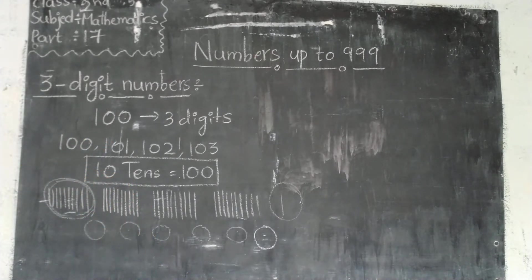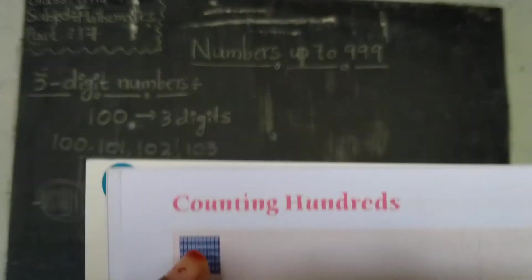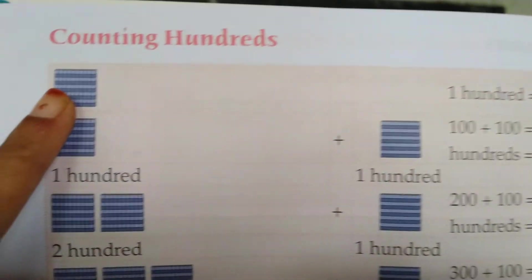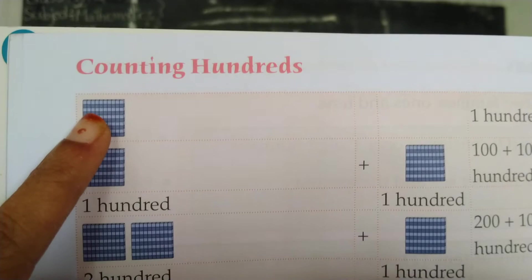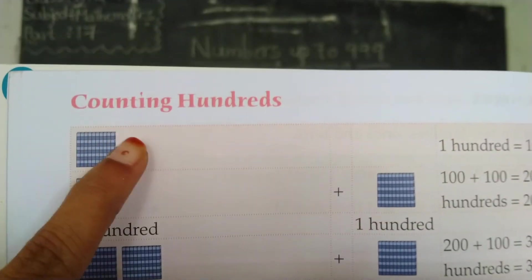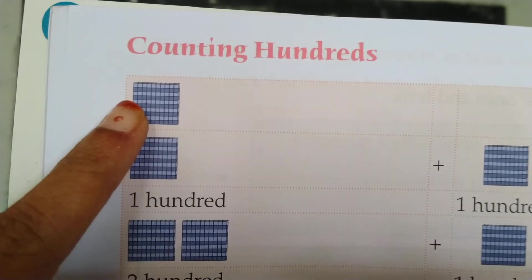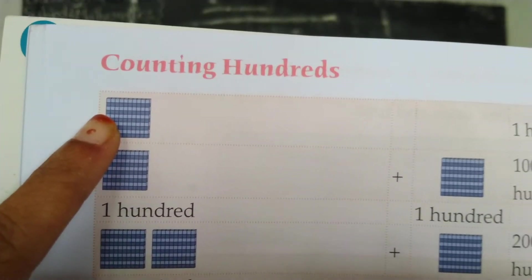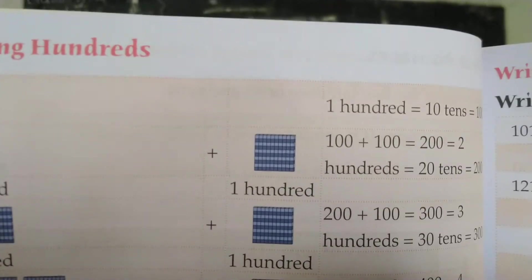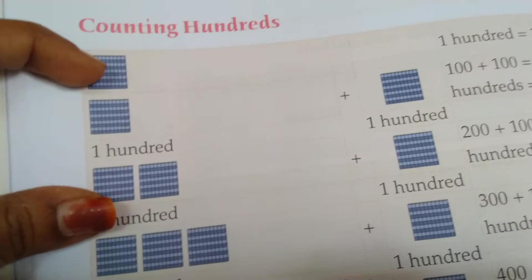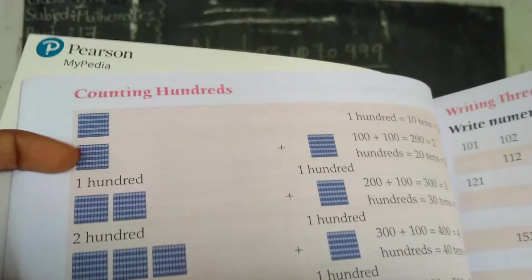So here we have a picture format. This total represents 100. That means 100 — here there are 10 tens. How many boxes are there altogether? 100 boxes. You have to count 100. Okay, this box totally equals 100.